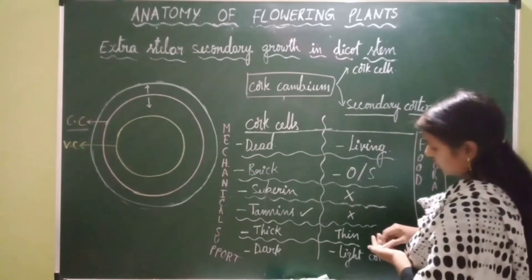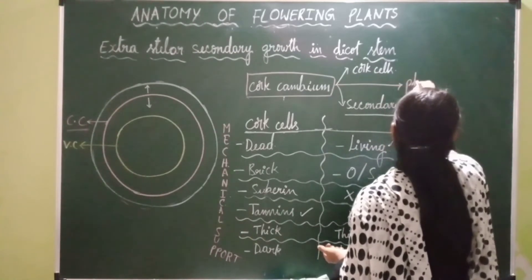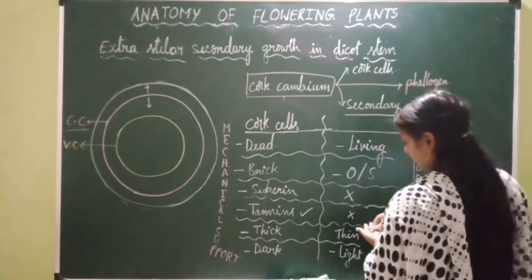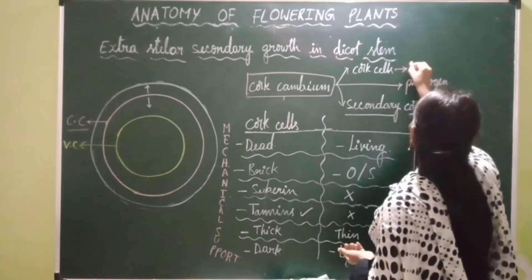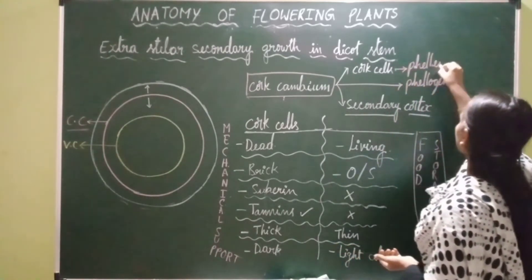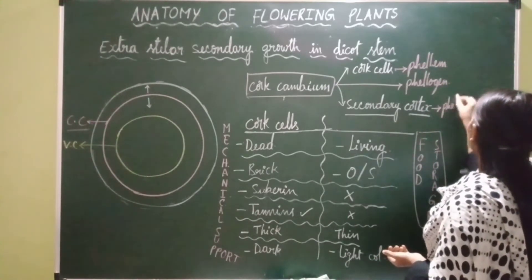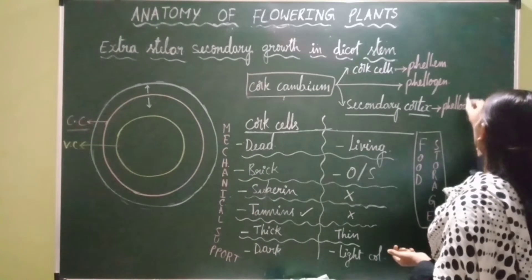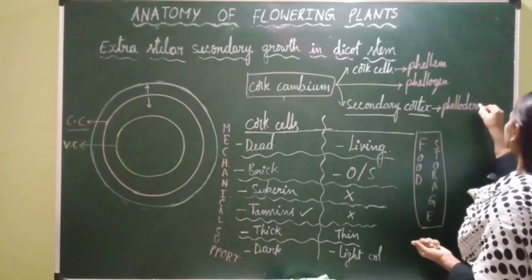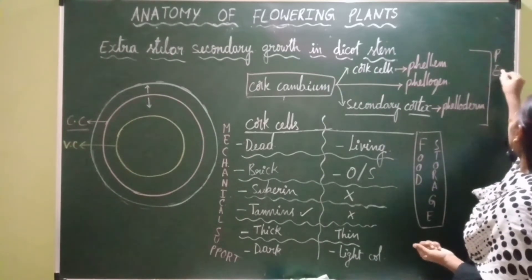Cork cambium is also called phellogen. Cork is also called phellum. And the secondary cortex is also called phelloderm. All three layers together — phellum, phellogen, and phelloderm — are together termed as periderm.